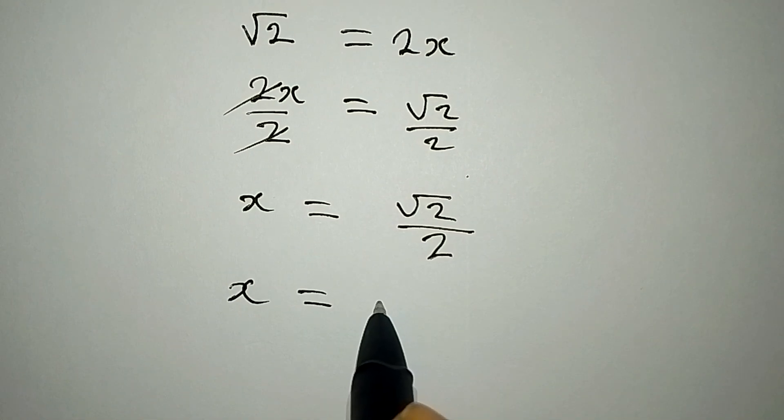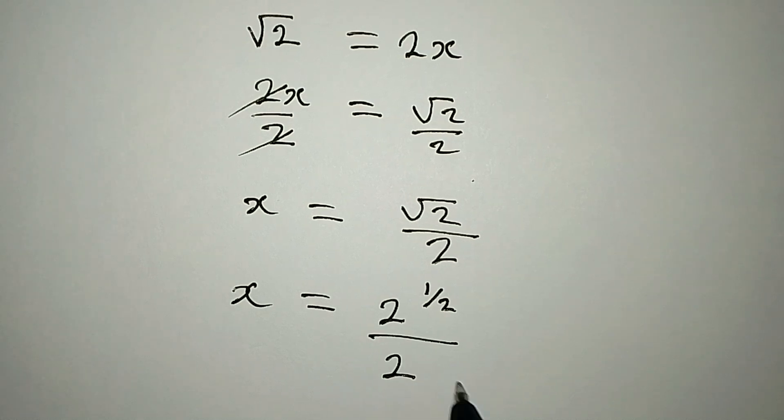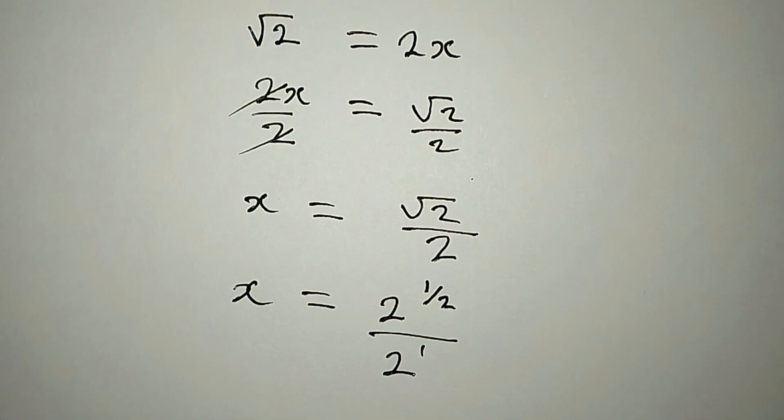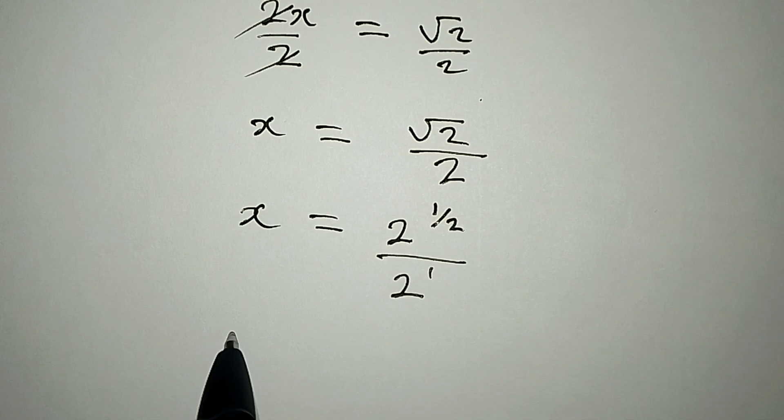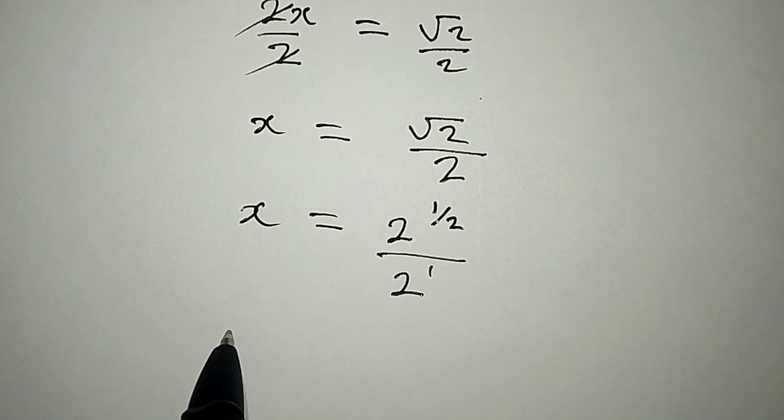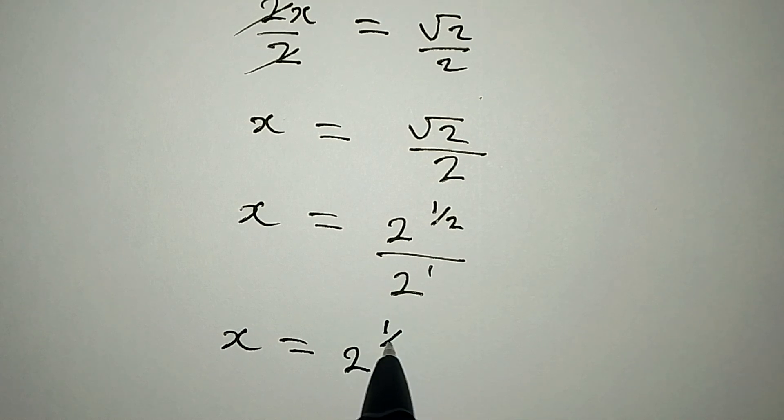X is equal to 2 to the power of half all over 2, and this is to the power of 1. So the next thing is to pick one of the bases according to one of the laws of indices. X will be equal to 2 to the power of 1 over 2 minus the power here is 1.